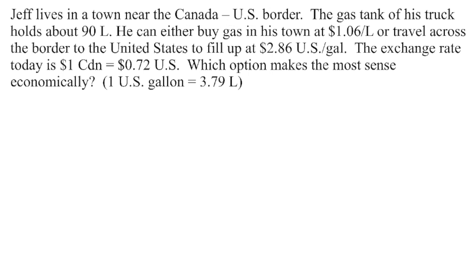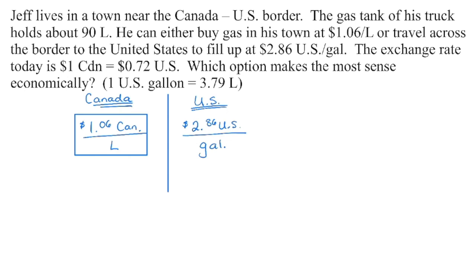In our next example, we have a person who lives by the Canada-US border. Most Canadians live by the US border, and he has a truck with a fairly large gas tank. He's either going to buy his gas in Canada, where gas is reported as dollars per liter, or he can go to the States where you're going to notice it's how many US dollars per gallon. The exchange rate also comes into place, so we're told that on this given day, this is what the exchange rate is, and you have to figure out economically, so in terms of money, which is going to be the cheaper option.